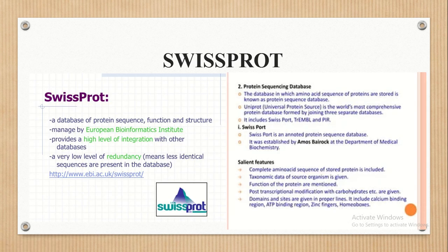Swiss-Prot is a database of protein sequences, mainly managed by EBI — the European Bioinformatics Institute. You can go to the website and search whatever protein sample you want, fetching results directly from Swiss-Prot.